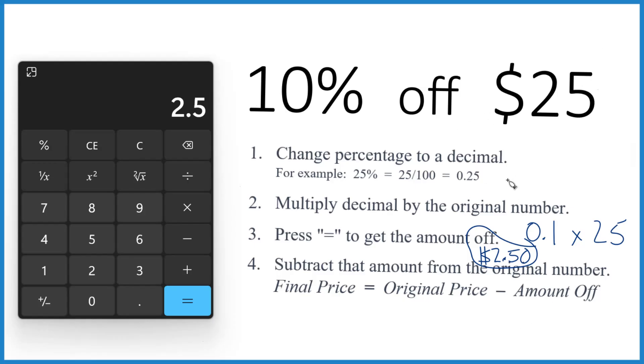If you want the final price, you take the $25, minus the $2.50, and it costs you a total of $22.50.